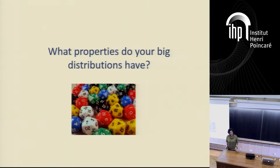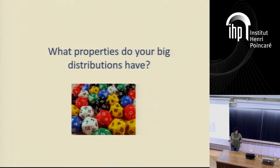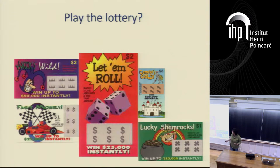The starting point is we're getting samples of some distribution, and we want to understand — we know nothing about this distribution, nothing at all — what are the properties of this distribution that we can determine very quickly with very few samples.